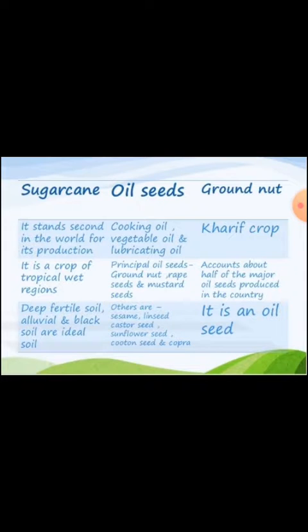Oil seeds include cooking oil, vegetable oil and lubricant oil varieties. The principal oil seeds are ground nut, grape seed and mustard seed. Others include sesame seeds, linseed, castor seeds, sunflower seeds, cotton seeds and copra seeds. Ground nut, being a Kharif crop, accounts for about half of the major oil seeds produced in the country. Ground nut is also an oil seed.